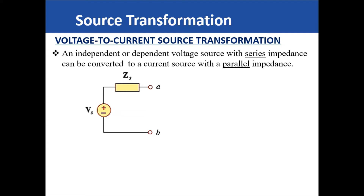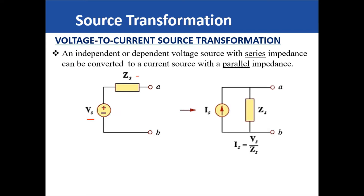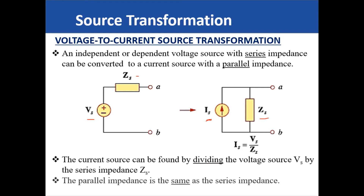Let's say we have a voltage source that is in series with an impedance. This series combination can be found in any part of a large circuit. The voltage could be an independent or a dependent voltage. According to source transformation, this combination can be transformed into a current source that is in parallel with an impedance. This current source is found by simply dividing the voltage source by the impedance that is in series with it, while the parallel impedance is found by simply copying that impedance.